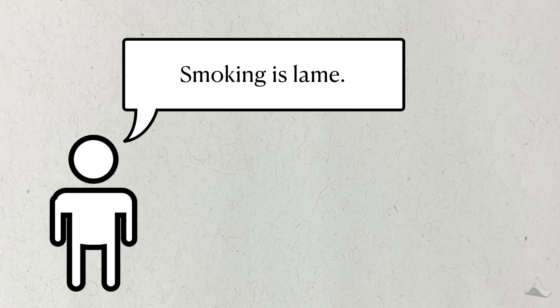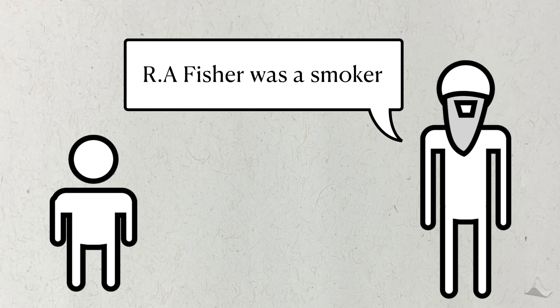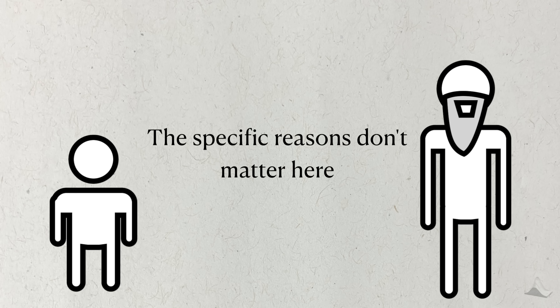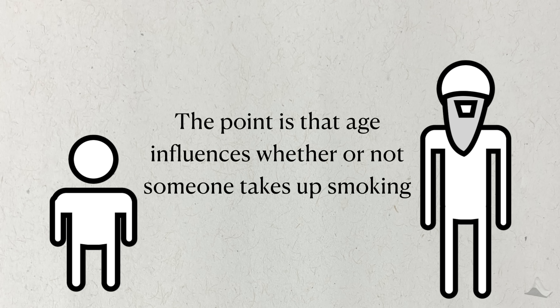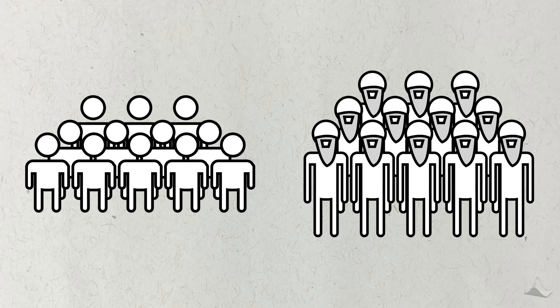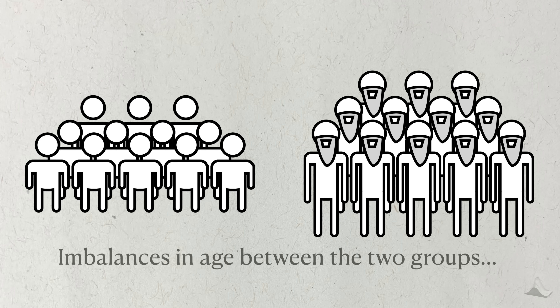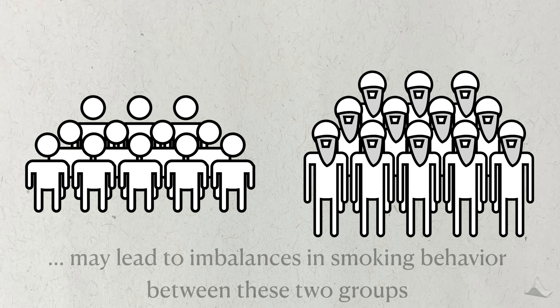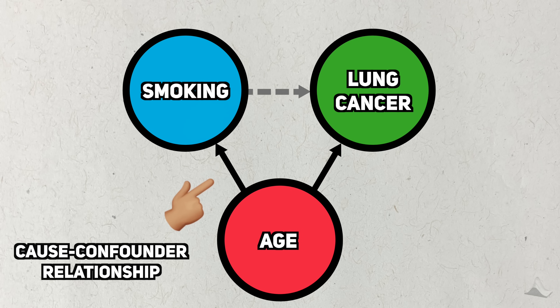Think about the relationship between smoking and lung cancer. A hypothetical confounder in this relationship is age. For younger people, they might be less likely to smoke cigarettes since they're too busy using other forms of nicotine. On the other hand, older people may be more likely to smoke because that's what they grew up with. The specific reasons don't matter, but it's important to note that age influences the probability that someone smokes. So if we're comparing two groups based on smoking and lung cancer, an imbalance of ages in the groups will probably cause an imbalance in the number of smokers. This is an example of a cause-confounder relationship.